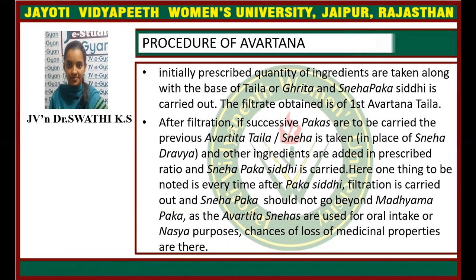Regarding the procedure of Avarthana: initially the prescribed quantity of ingredients are taken along with the base of Taila or Ghrita, and Sneha Paka Siddhi is carried out. The filtrate obtained is the first Avarthana Taila. For successive Pakas, the previous Avarthana Taila or Ghrita is taken in place of the Sneha Dravya, other ingredients are added in prescribed ratio, and Sneha Paka Siddhi is carried out. Every time after Paka Siddhi, filtration is carried out, and Sneha Paka should not go beyond Madhyama Paka.